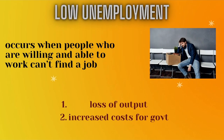The next objective is Low Unemployment. Unemployment occurs when people who are willing and able to work are not able to find a job. Problems with high unemployment include: a loss of output, since unemployed people do not produce goods and services, and increased costs for the government, which must spend more on unemployment benefits — money given to unemployed people. It's always better to have a low unemployment rate and a high employment rate.